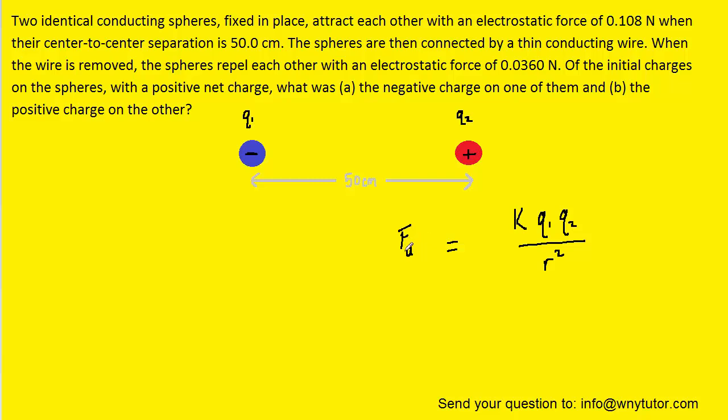We have the Coulomb constant k multiplied by the charges and then divided by the distance between the charges squared. Now remember that f sub a was the force acting on charge 2. Ask yourself which direction would that force be pointing? Would it be to the right or to the left? Because it was an attractive force, it would be pointing to the left towards that negative charge.